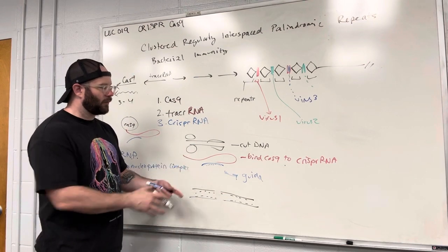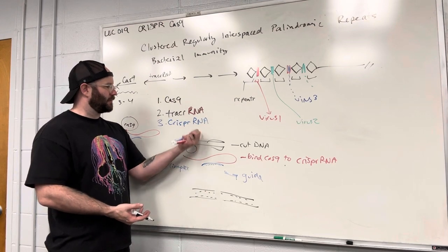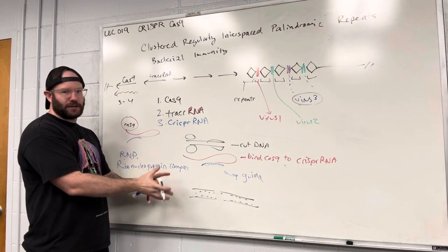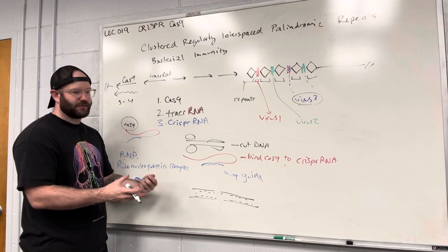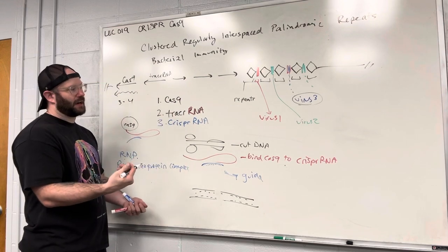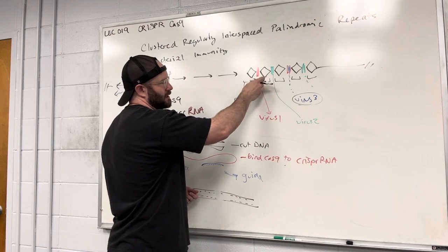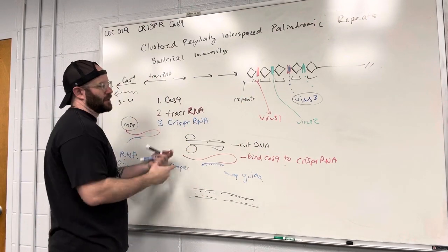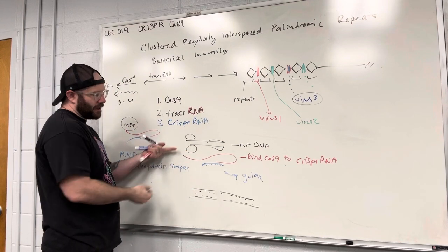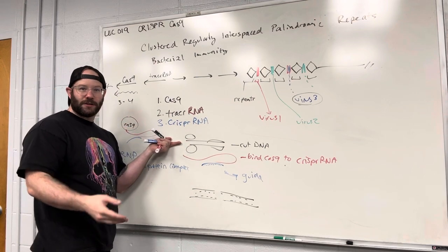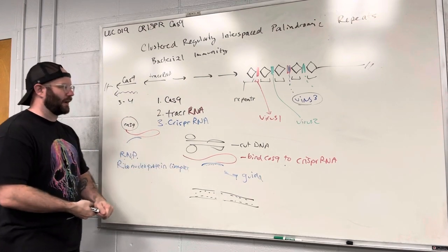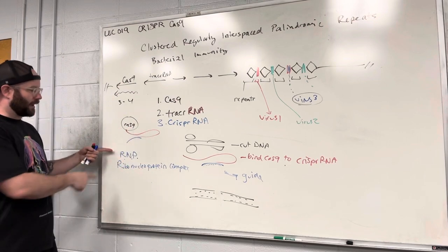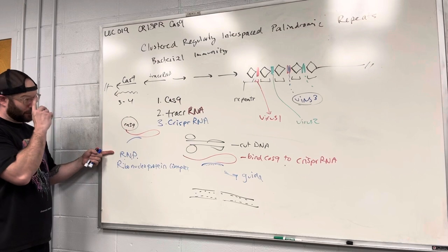So with this guide, which virus would get cut — virus one, two, or three? Virus three. You can see how this is a very adaptable immunity system. Any time a bacterium gets infected with a new virus, this system can capture little sequences of that virus genome, incorporate them through recombination into the cluster repeats, and those repeats get transcribed as CRISPR RNA. If that virus ever tries to reinfect the cell, it can be targeted by this nuclease and its genome would be chopped up. This is the basic CRISPR system — the RNP, ribonucleoprotein complex.